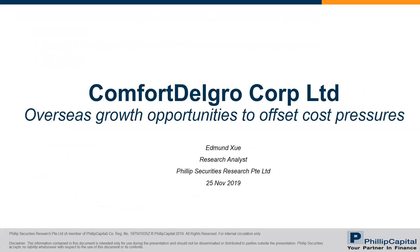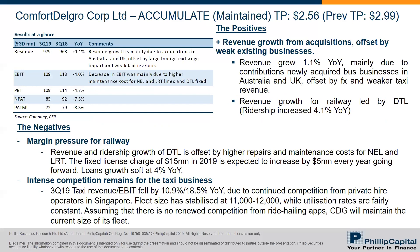Now moving to Comfort DelGro. For 3Q 2019, the positive is that there is still revenue growth from acquisitions, but it is offset by weak existing businesses. Revenue grew about 1% year-on-year, mainly due to contributions from newly acquired bus businesses in Australia and UK, largely offset by FX losses and weaker taxi revenue. Revenue growth for railway is mainly led by the Downtown Line, as ridership grew 4.1% year-on-year.